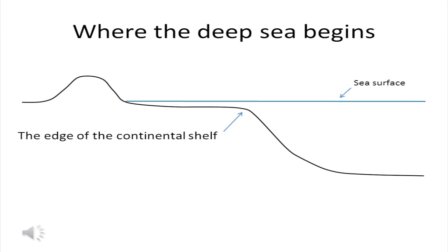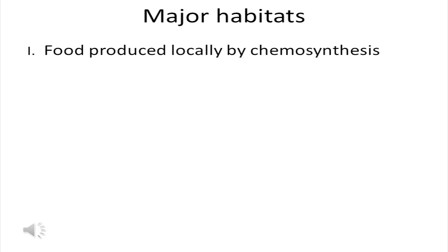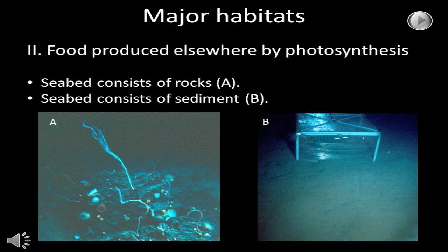The deep sea begins at the edge of the continental shelf. This feature separates a basically shallow water fauna from a deep sea fauna. The deep sea consists of two very different major habitats. In one, food is produced locally by chemosynthesis, and an example of this kind of habitat are the hydrothermal vents. In the second major habitat, food is produced elsewhere by photosynthesis, and either falls or is transported into the deep sea.